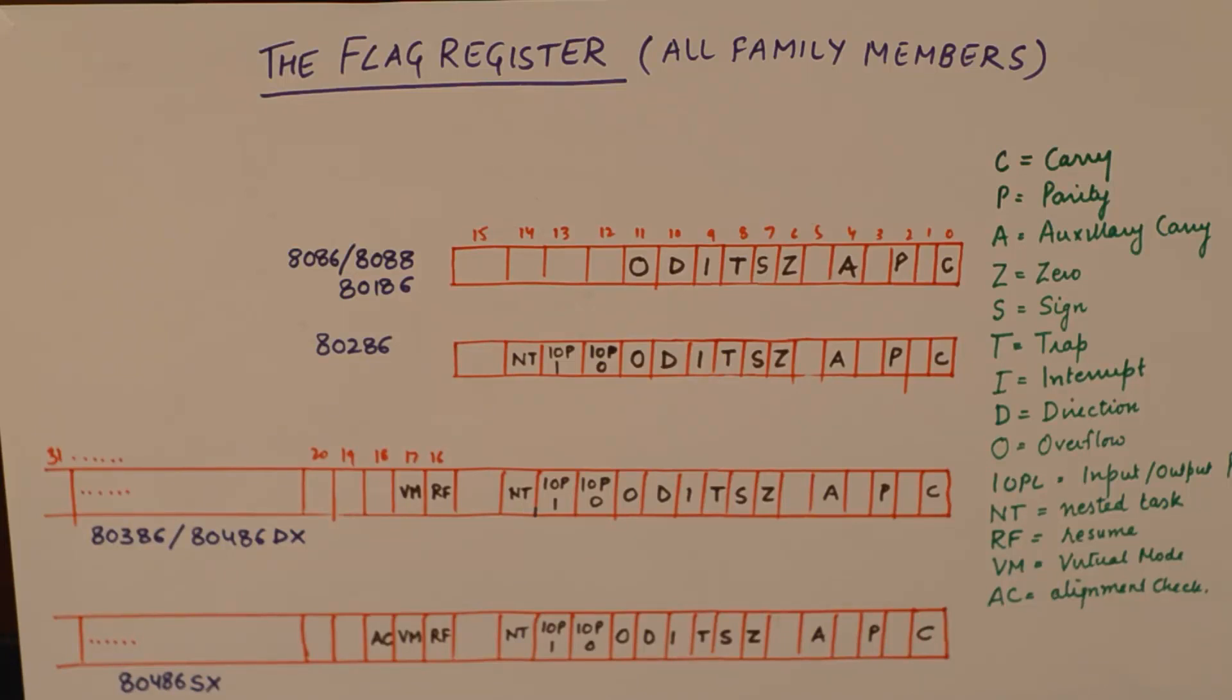So this is what I am going to illustrate in this video. I will not talk about the functioning of flags although I have written down the names of the flags on the side, but the main objective of this video is to show you how the size of the flag register has not affected the chronological study and the upward compatible behavior of the microprocessors architectures. So let us begin.